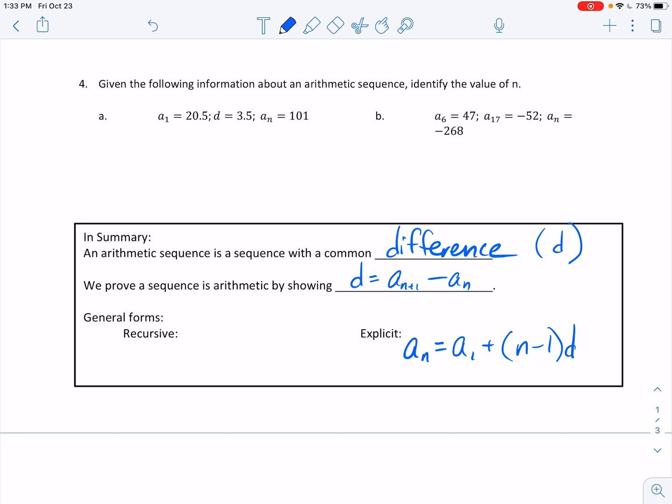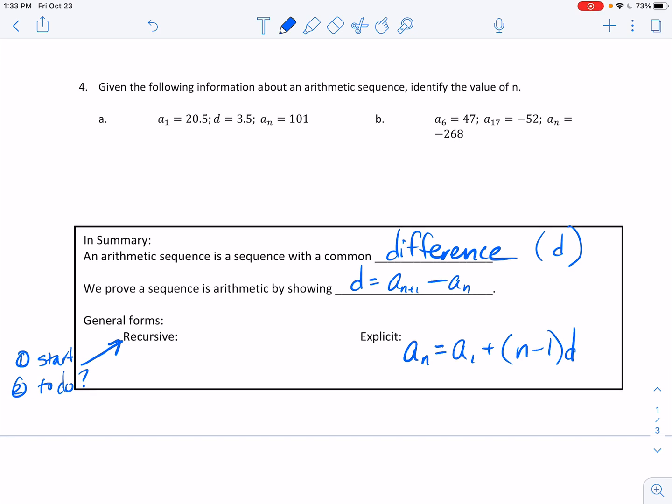This right here, a sub n equals a sub 1 plus n minus 1 times d, this is actually going to go down here. An arithmetic sequence is a sequence with a common difference, and we typically would use d to be that common difference. We prove a sequence is arithmetic by showing that there's a common difference the whole time. What we can do is we could say d is equal to a sub n plus 1 minus a sub n.